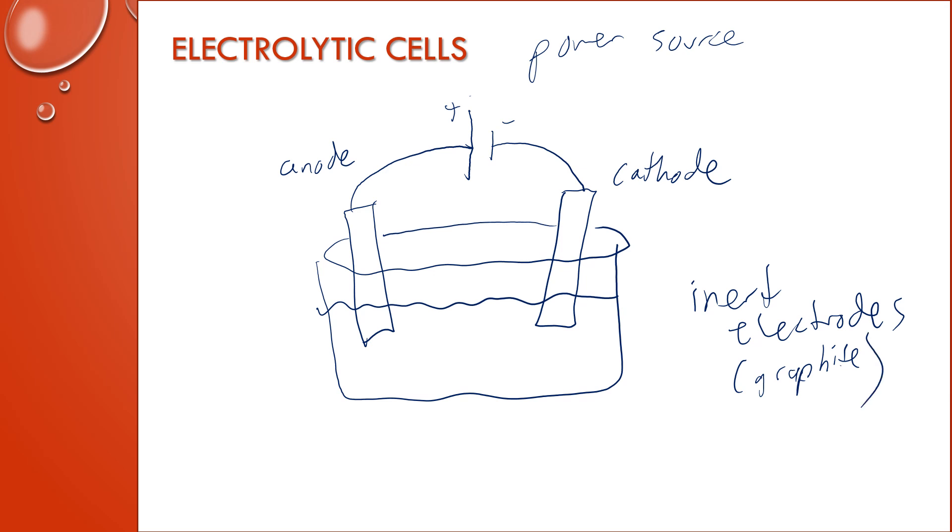Now, if your electrodes are inert, that means whatever the redox reaction is, is happening in the electrolyte solution there. One example of that would be something like a molten salt, like sodium chloride. But you can use other salts as well. And in this case, the salt would be forming sodium and then chlorine gas. So that's an example of an electrolytic process.